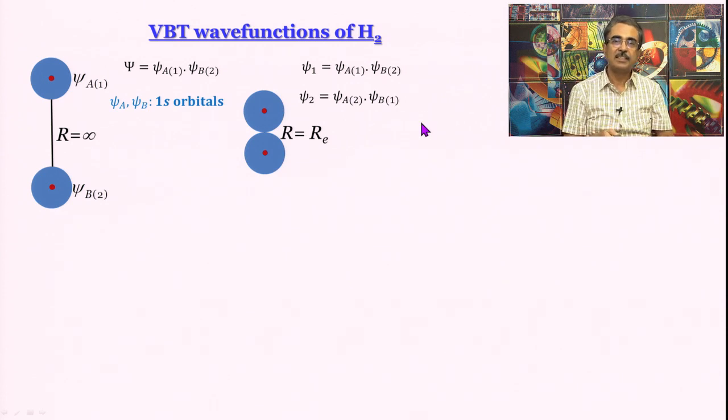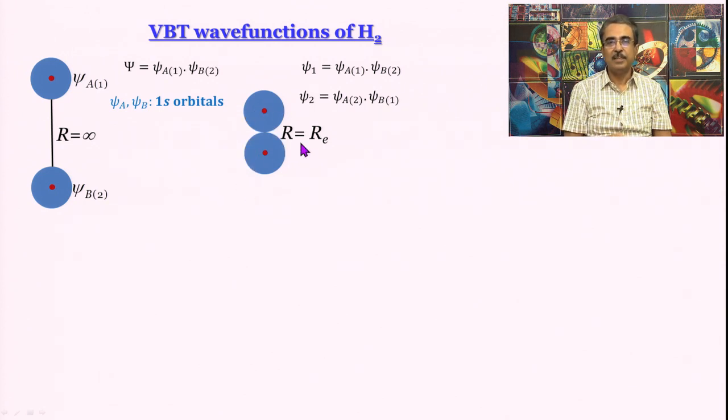Now we say that this is the possibility of electron number 2 being in atom A, electron number 1 being in atom B, to put it in a very crude manner. We are assuming that atoms are retaining their identities in the molecule and this is how we are formulating it.